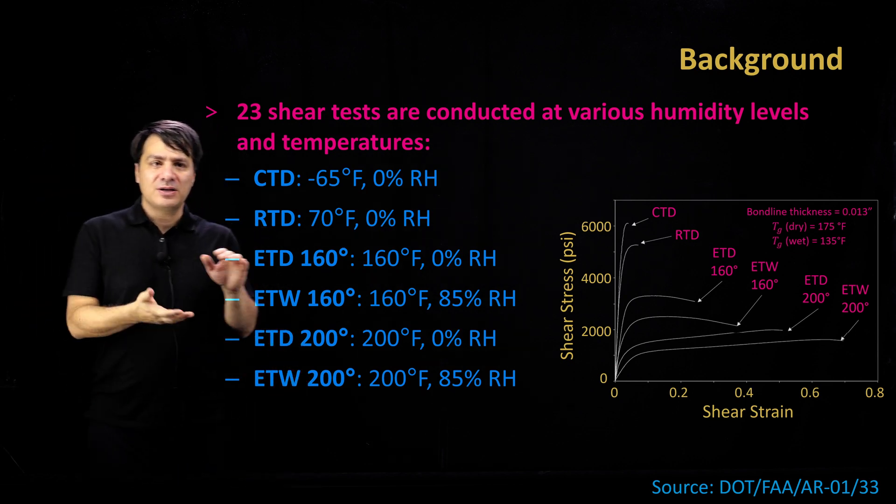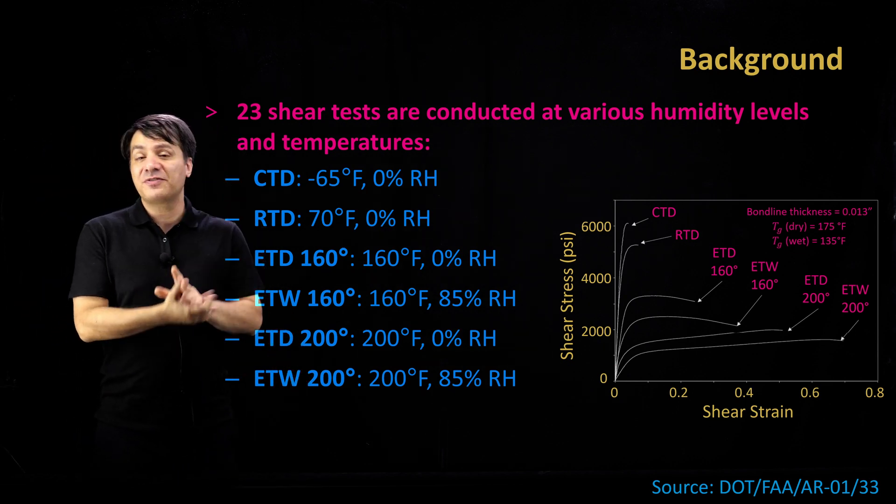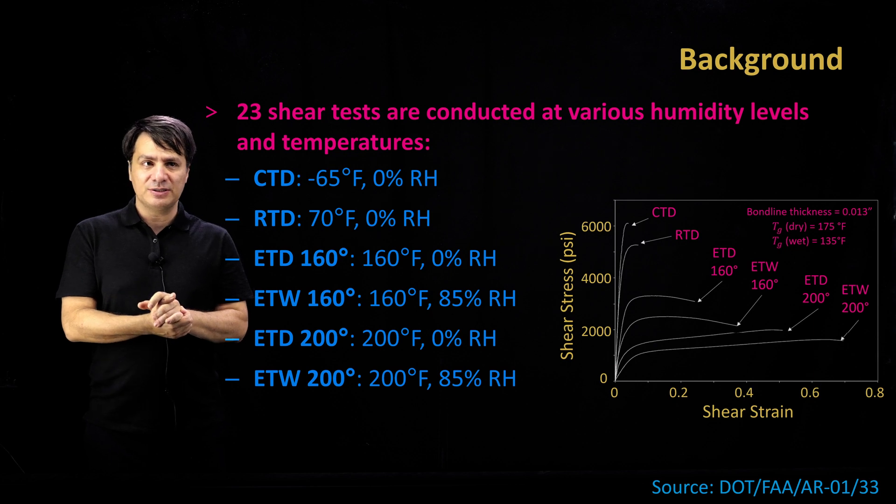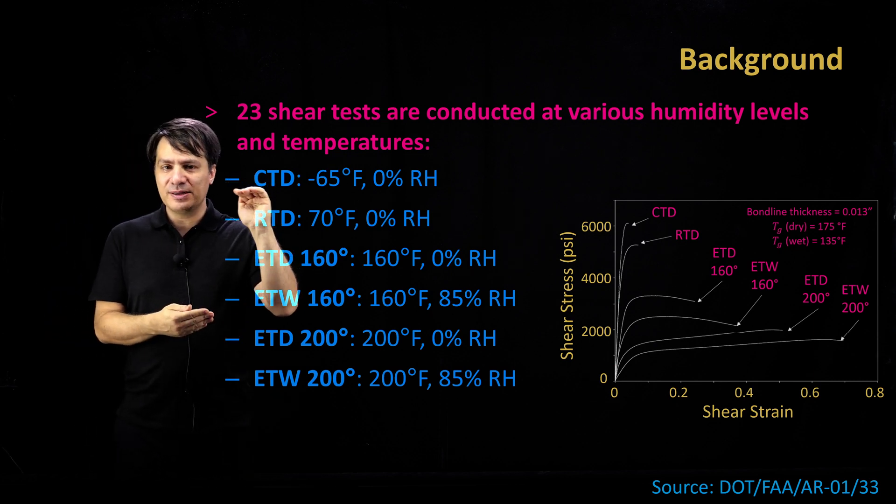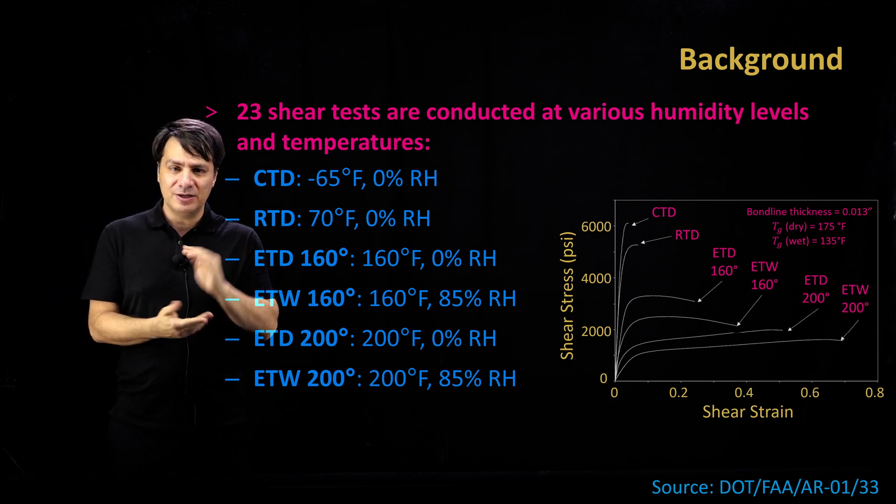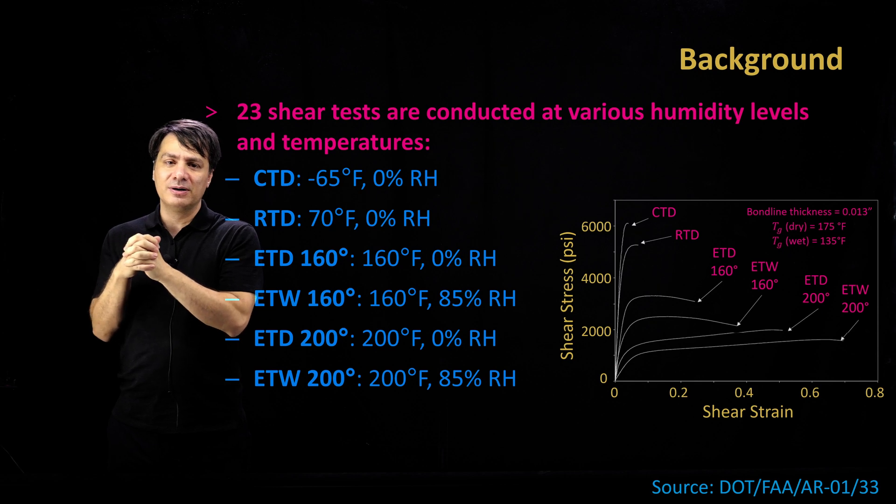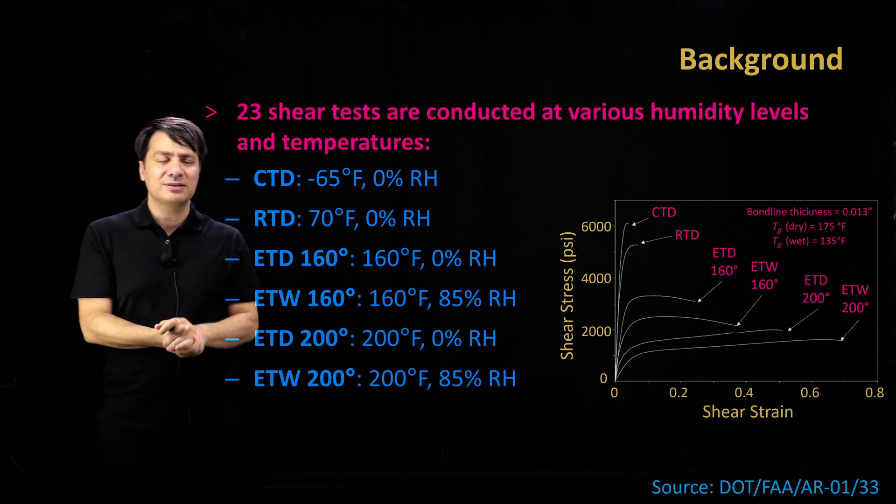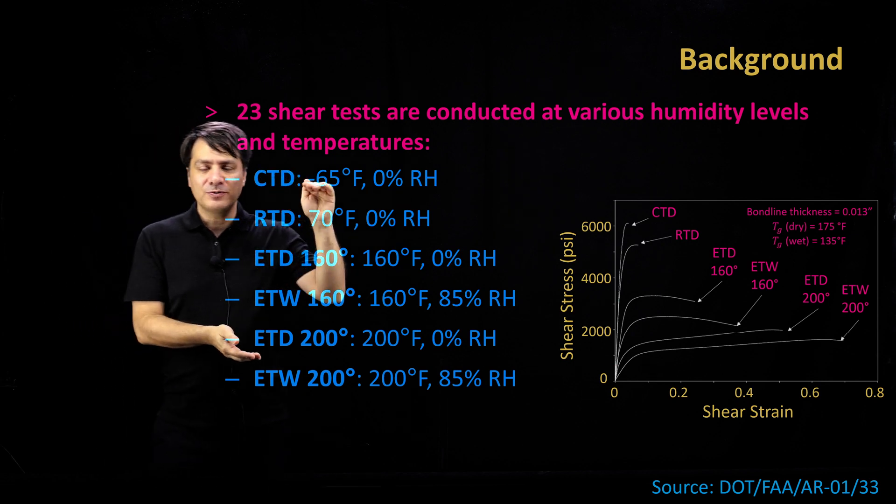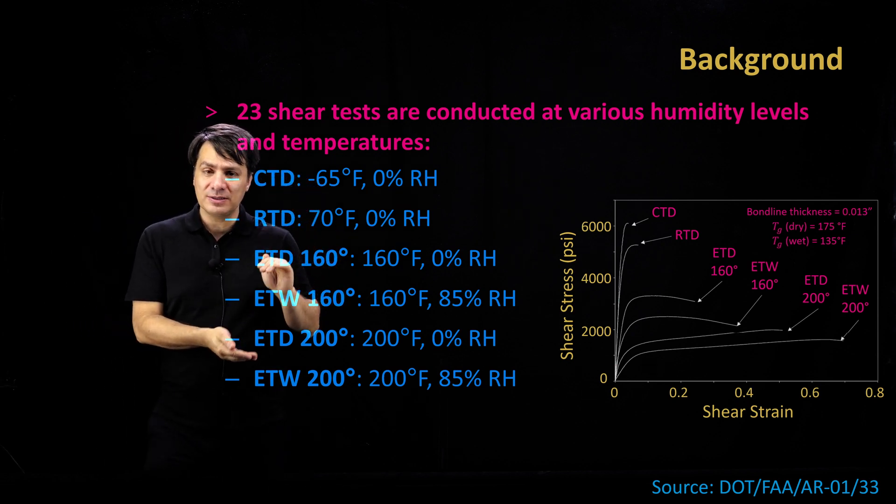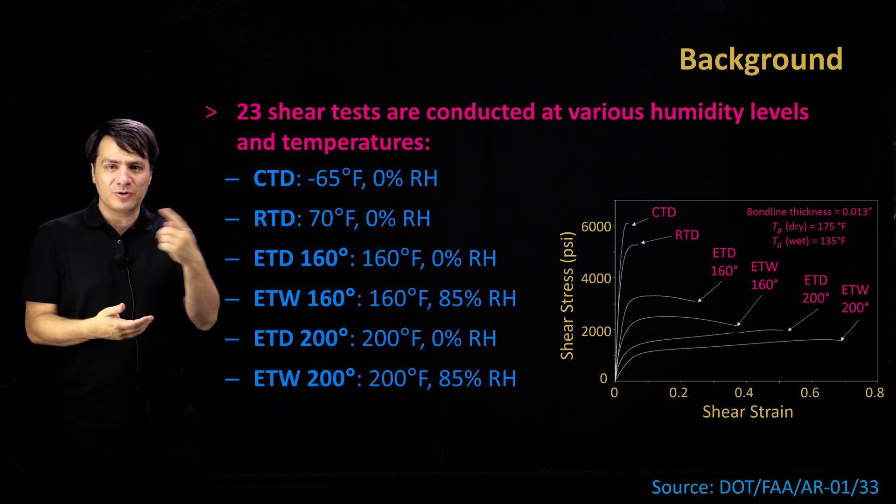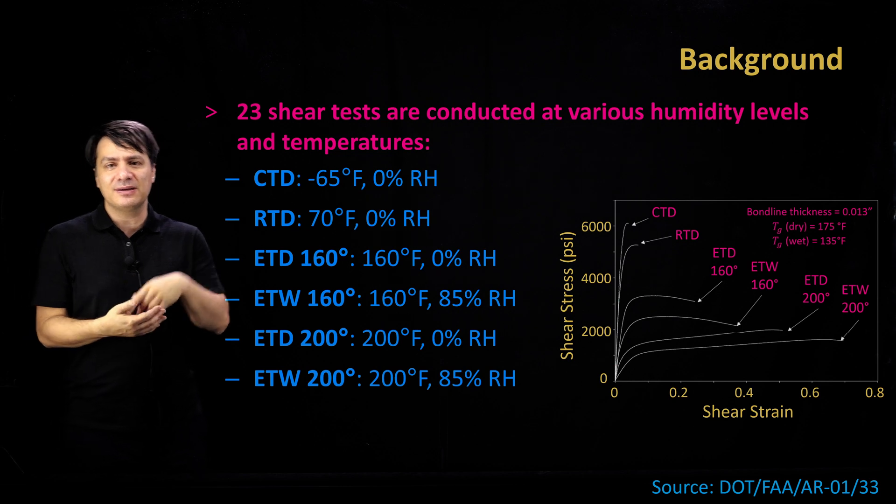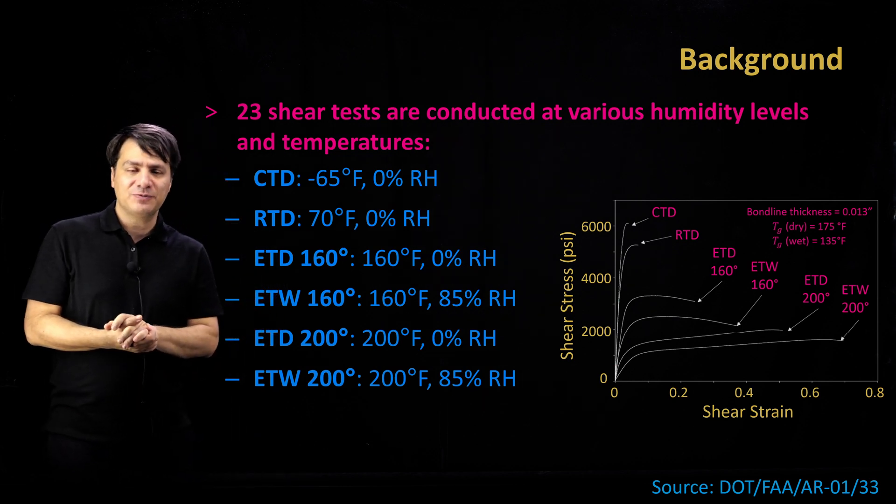FAA has conducted tests with different environmental conditions. These are temperature conditions and humidity conditions, where the samples are taken to equilibrium under those conditions and then tested. For each of these tests or conditions, multiple tests have been done as repeats, so we are capturing the variability of tests with each condition.